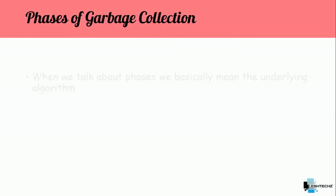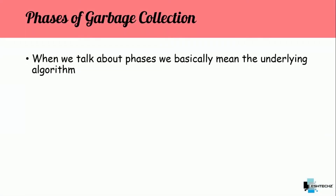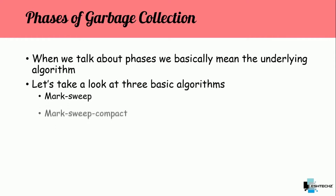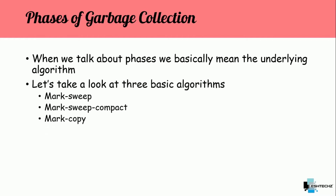When we talk about phases, we basically mean the underlying algorithm. Let's take a look at three basic algorithms: mark sweep, mark sweep compact, and mark copy. The main and common phase among all three algorithms is the marking phase. With the help of this phase, the garbage collector identifies live objects and dead objects — once this phase is done, the garbage collector knows which objects need to be collected.